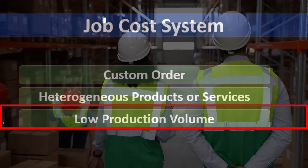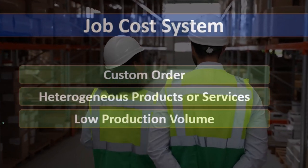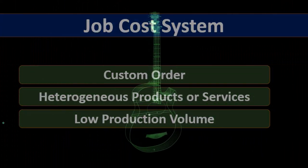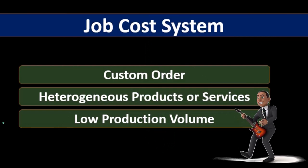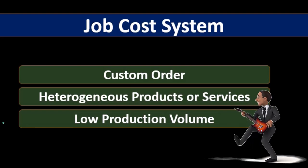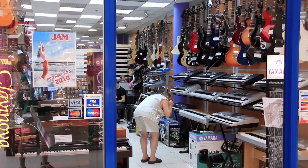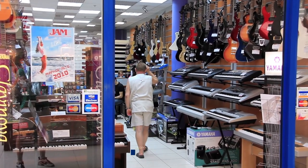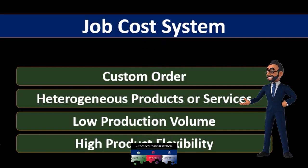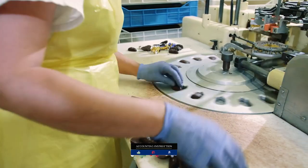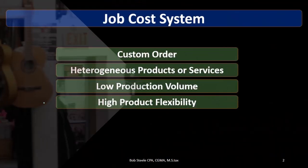Low production volume means that we're not producing as many items as in a process cost system. If we're making custom guitars, we produce far fewer of them, though we charge a higher price. As opposed to stamping out identical guitars, which would yield high volume with less customization. High product flexibility also follows from the idea that the products are custom. The more customization within a product, the more we need a job cost system rather than a process cost system.